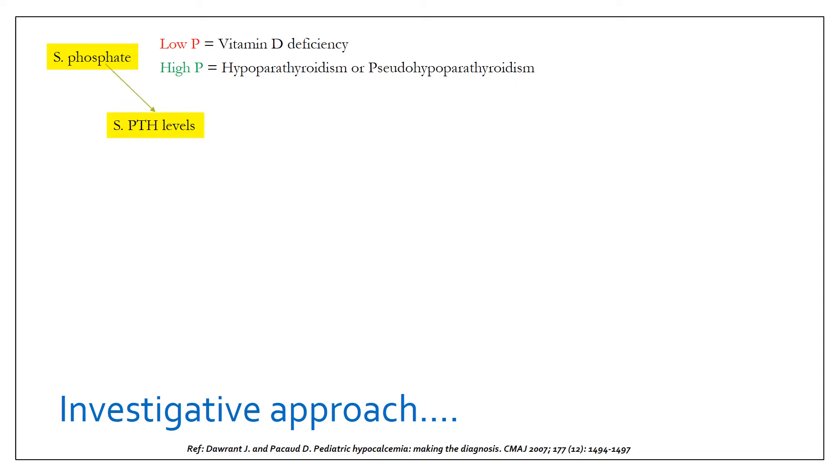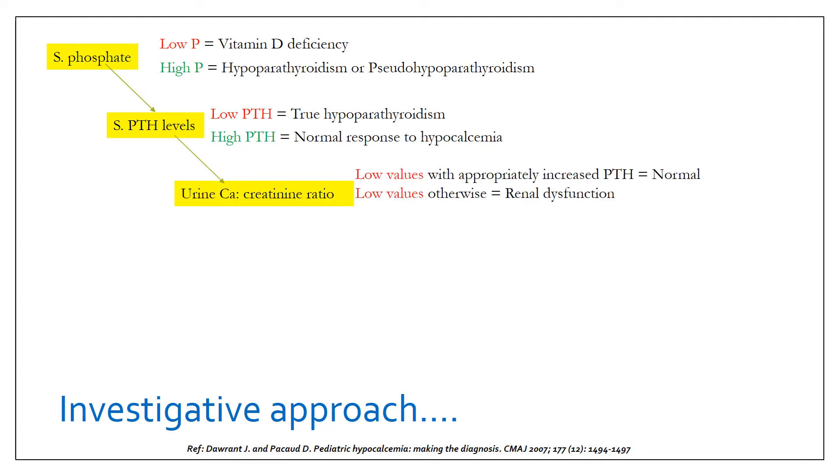If inconclusive, you should go for serum parathormone levels. If low, it suggests true hypoparathyroidism. And if high, it suggests the normal response to hypocalcemia.